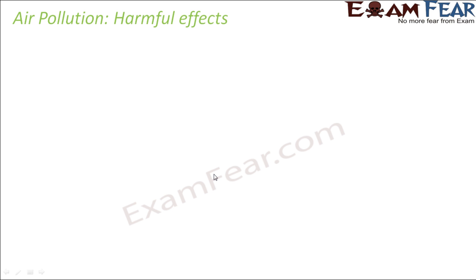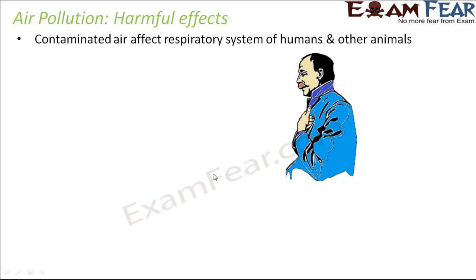Let us look at the harmful effects of air pollution. Contaminated air affects the respiratory system of humans and other animals. When we breathe in, our respiratory system is directly involved. We breathe in through our nostrils and it goes directly into the lungs, which are the main organs of the respiratory system. If the air is contaminated and has some foreign particles or harmful substances, they are directly going to affect our respiratory system.